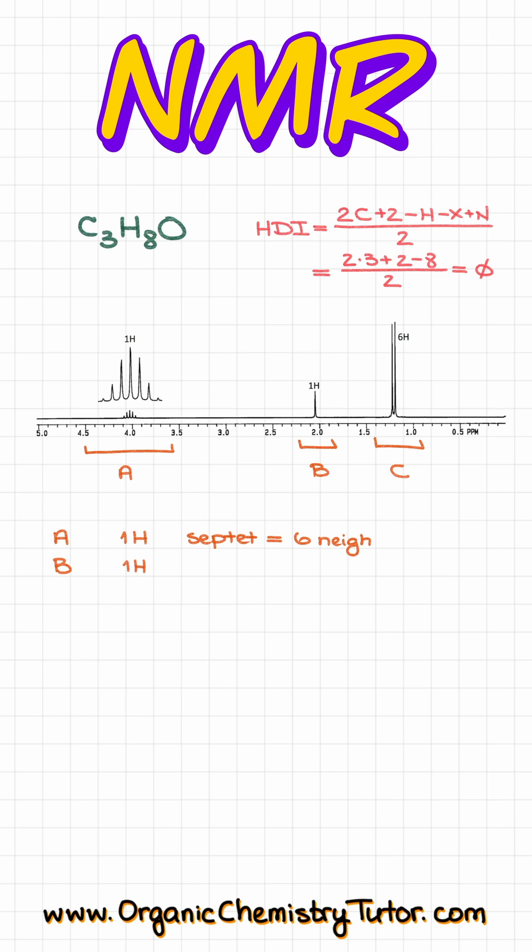My signal B comes from a single proton, which is a singlet, which means that that proton does not have any hydrogens or potentially that is an OH group, which does not split in the HNMR spectrum typically.